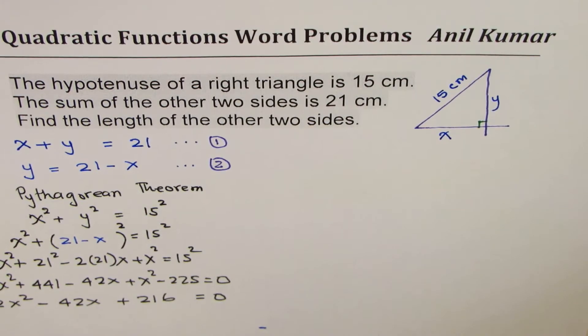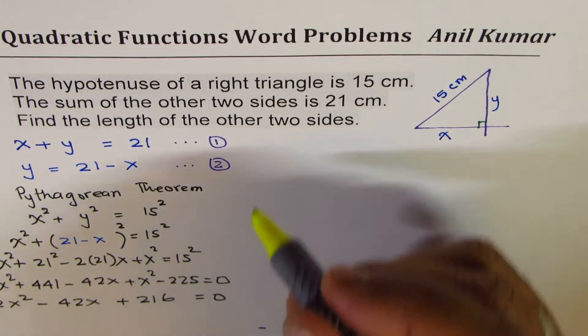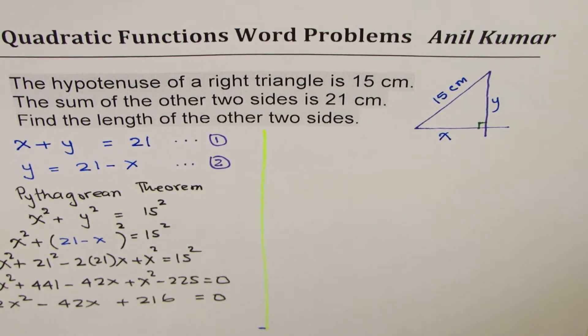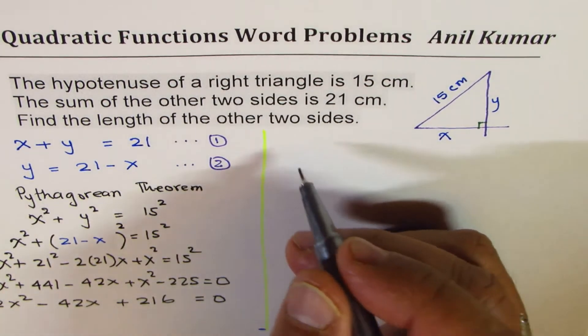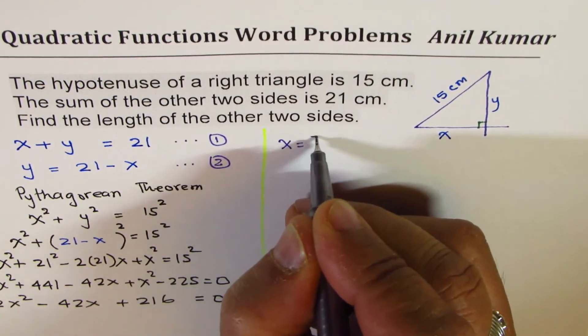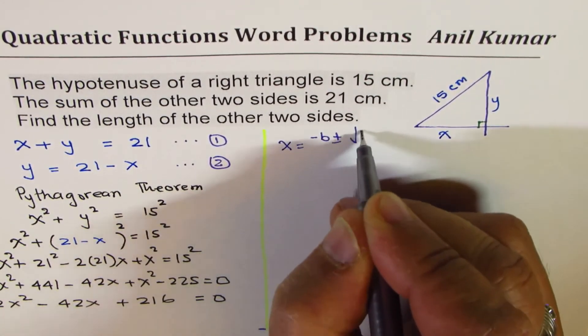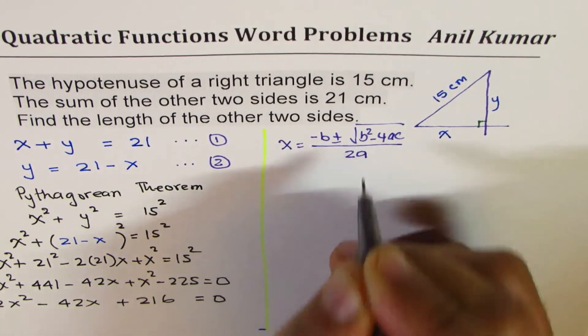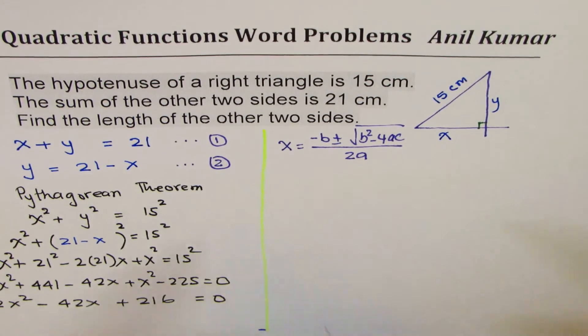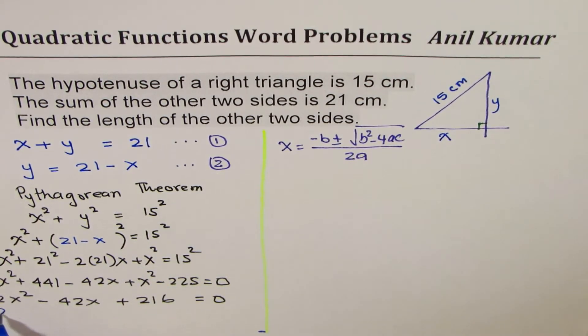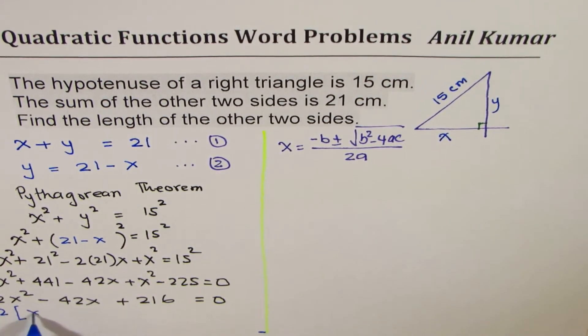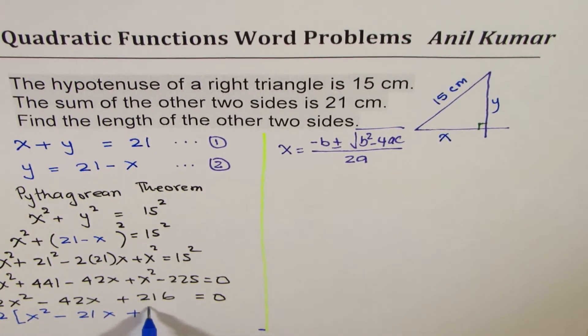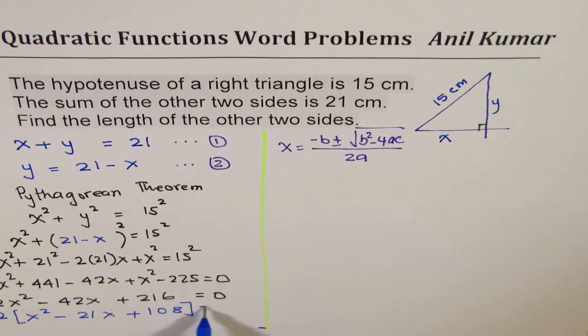You get a quadratic equation to solve. At this stage, you have a couple of options. You can solve using the quadratic formula, which is x = (-b ± √(b² - 4ac)) / 2a. If you're using this formula, it's a good idea to factor out 2—you're working with smaller numbers.